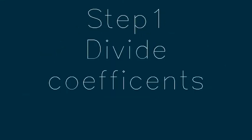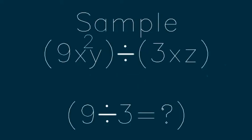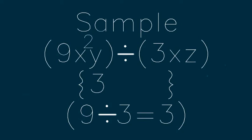The first step when you're dealing with division in algebra is to divide the coefficients. So what are the coefficients over here? In the first algebraic term you have nine as the coefficient, and in the second term you have three as the coefficient. So nine divided by three gives you three, so we put three in our answer box and proceed to the second step.